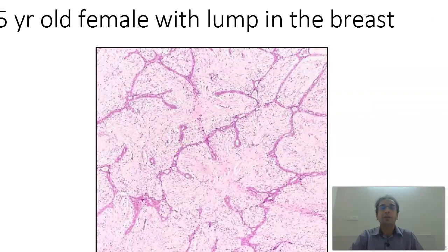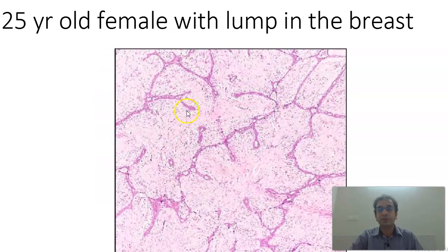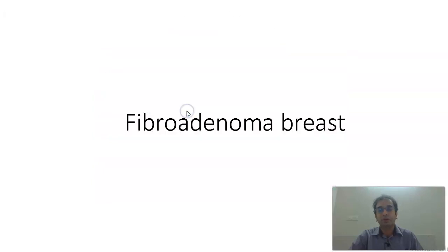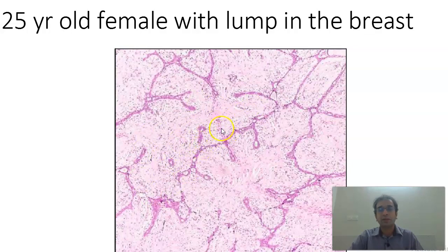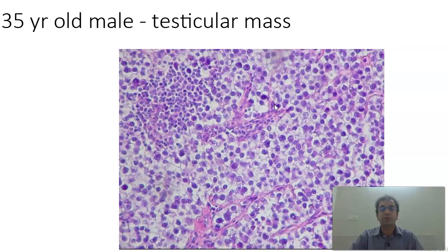A 25-year-old female with a lump in the breast. What you find here is an intracanadicular pattern of the ducts, which are compressed by the proliferation of the stroma. This is going to be a fibroadenoma of the breast.